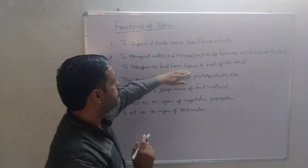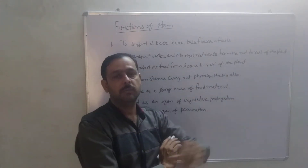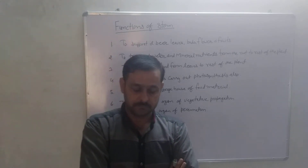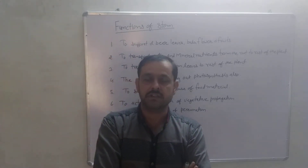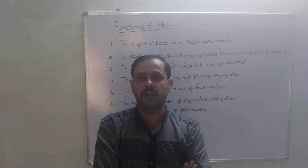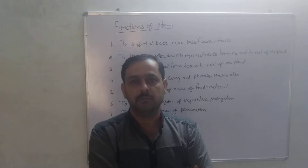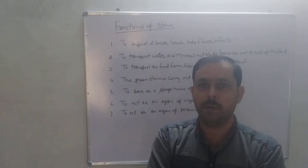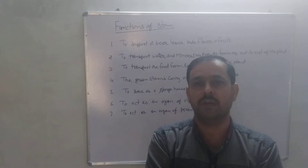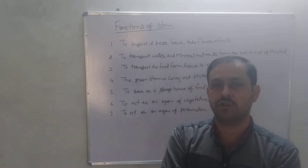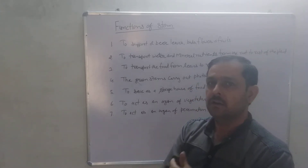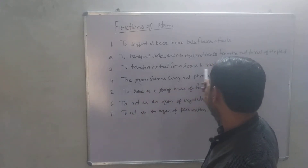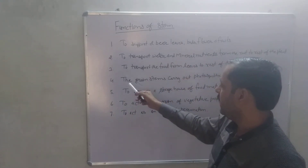Third, to transport the food from leaves to the rest of the plant. As we know, the leaf is the structure in which food is made, and from the leaf to the needy part — or we can say to the rest of the plant — stem transports this food material from the leaf.